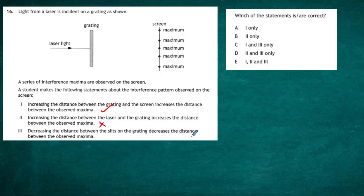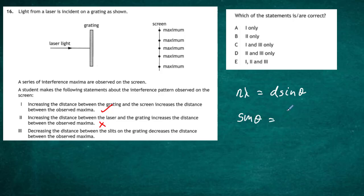What about the third statement: decreasing the distance between the slits on the grating increases the distance between the observed maxima? Looking at the diffraction grating equation, n lambda equals d sine theta, where d is the distance between the slits. Rearranging gives sine theta equals n lambda over d. So if you decrease d, you increase sine theta, meaning the pattern spreads out and the distance between maxima should increase rather than decrease.